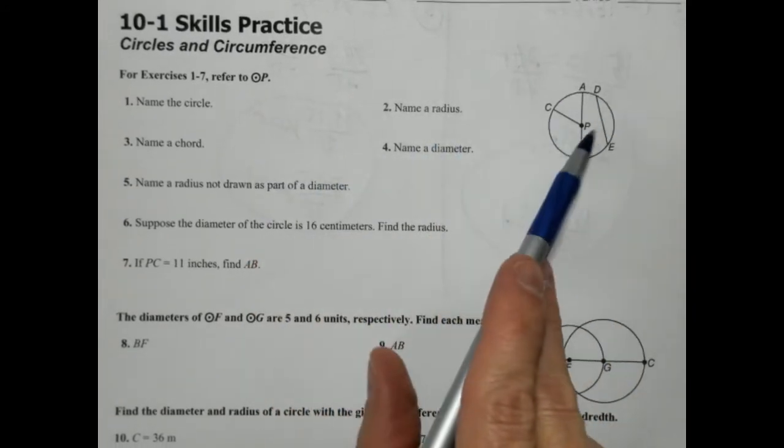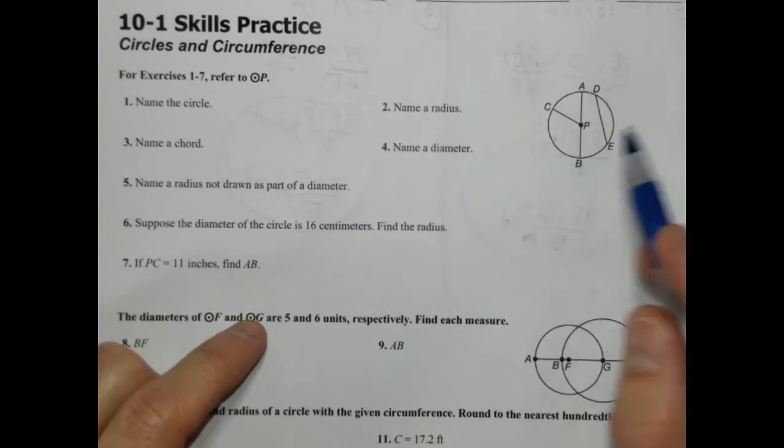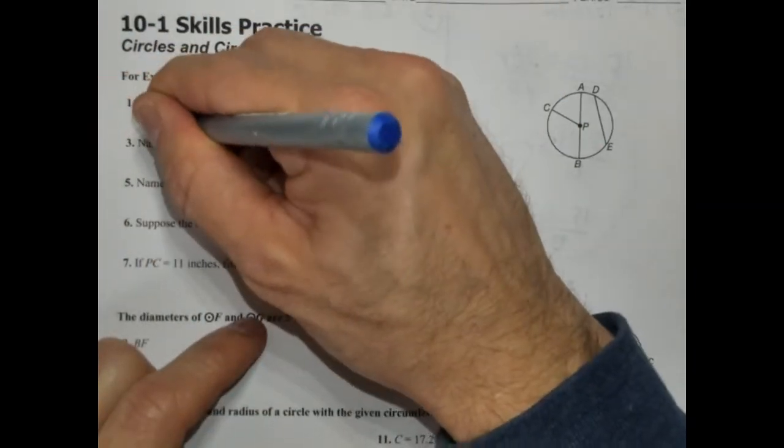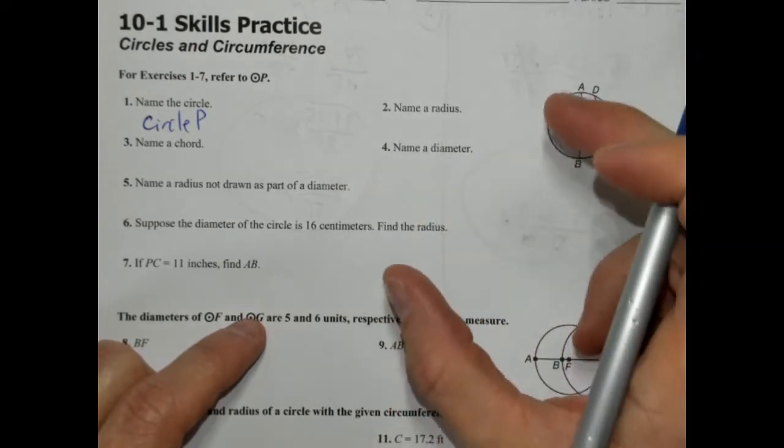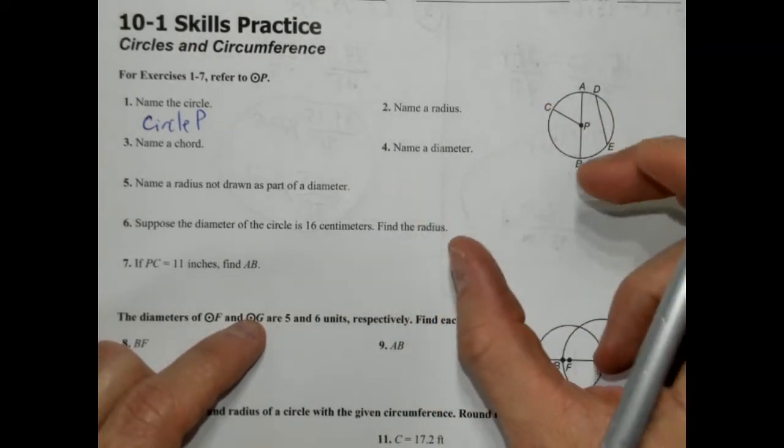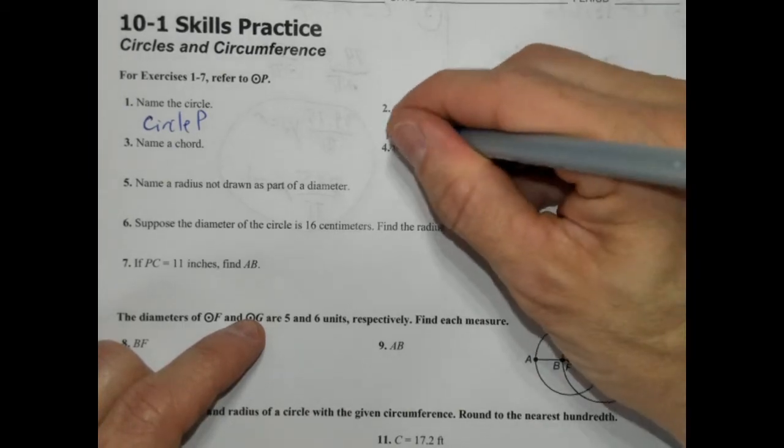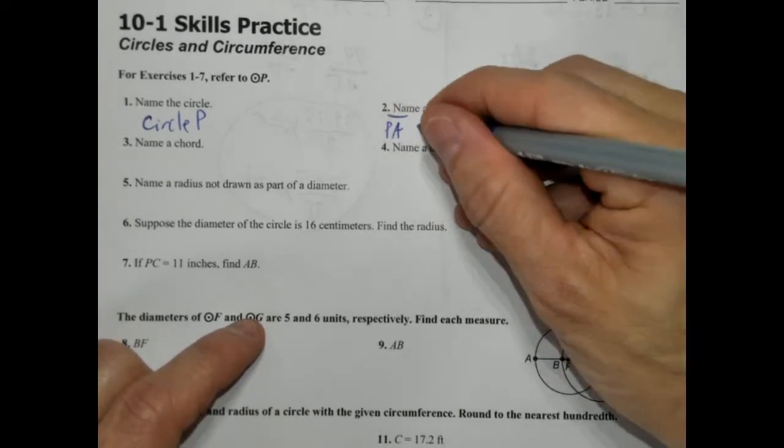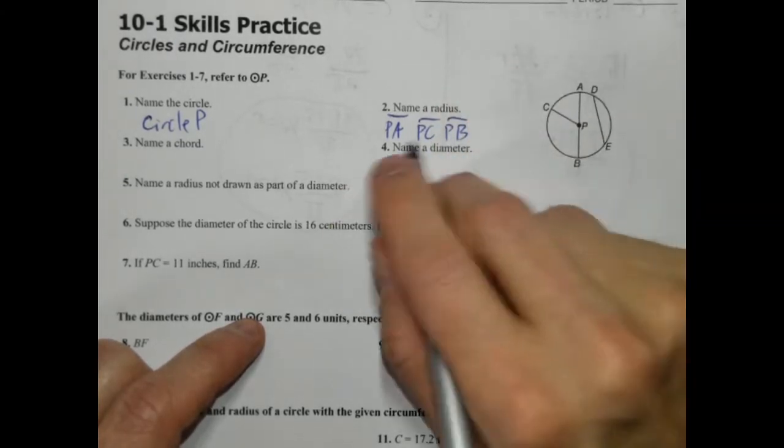All right, so here we go. The first seven we're going to be using this example over here on the right. So name the circle. Remember we name a circle by its center point, which in this case is P. So we're going to call this circle P. Name a radius. A radius is a line segment who has an endpoint at the center and the other endpoint on the circle itself. So we have a few different options here. We have PA, PC, or PB. And again, you can always reverse the order of those letters.